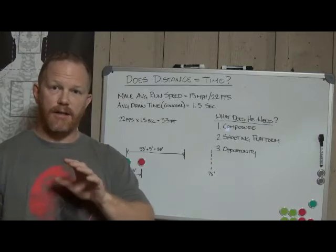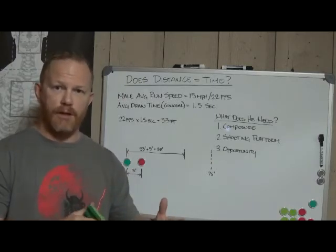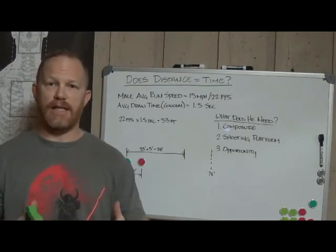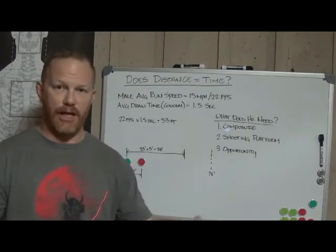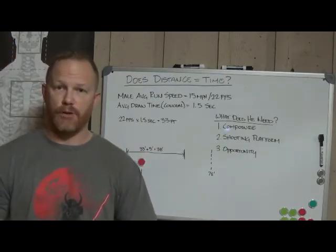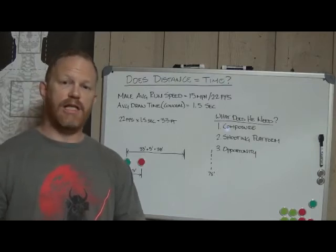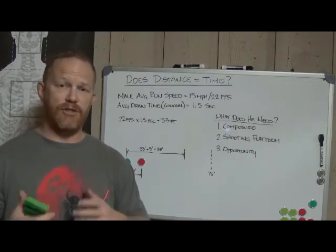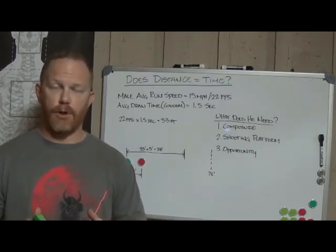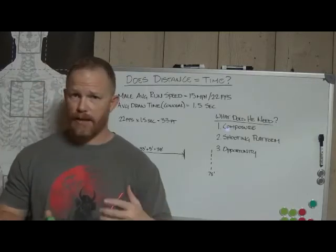Well, going back to the sweep that we did, one of the things that I had mentioned is that in order to be able to thwart an opponent, I need to know what it is he needs to be able to accomplish his task. So one of the things that he needs is composure. In order to be able to access his tools, he needs to be able to clear that garment, and he's going to need a certain degree of composure regardless of whether or not we're talking about a sociopath or a psychopath.